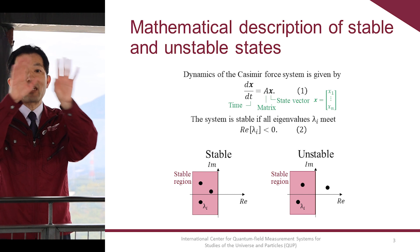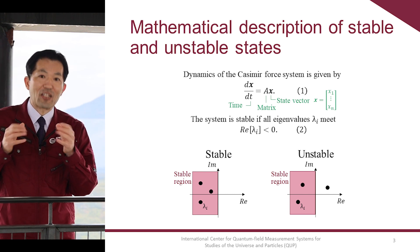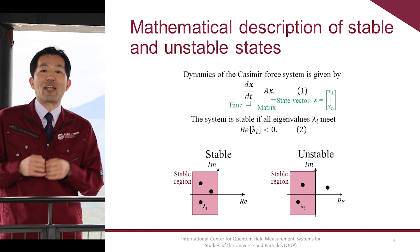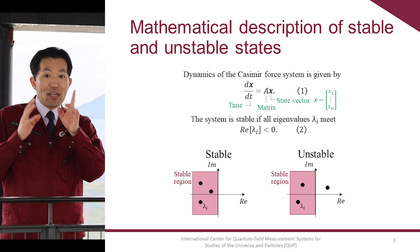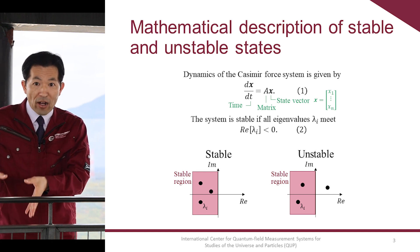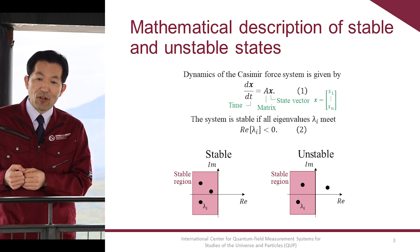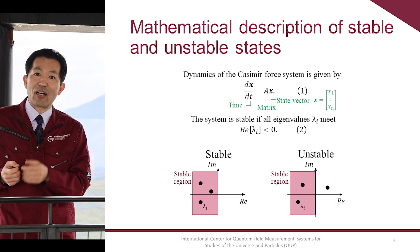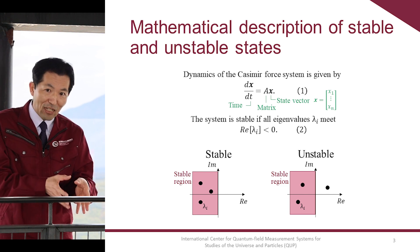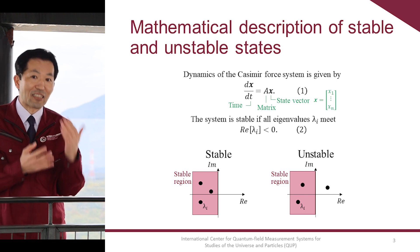Solving this simple equation, we obtain eigenvalues, which are complex. If all eigenvalues have negative real parts, the system is stable. On the other hand, if at least one of the eigenvalues has a positive real part, the system is unstable.